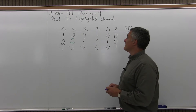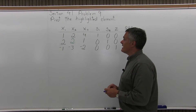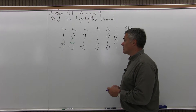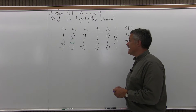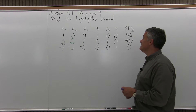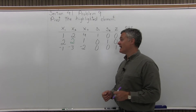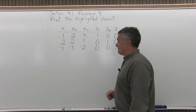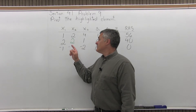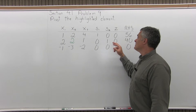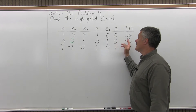It says, Pivot the Highlighted Element, and we have a tableau with the following columns: X1, X2, X3, S1, S2, Z, and RHS for right-hand side. This tableau has three rows. The top row is 1, 2, 4, 1, 0, 0, and 56.